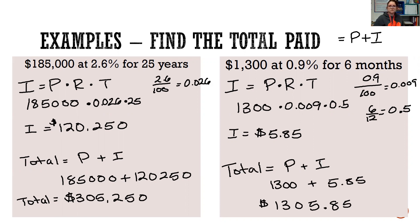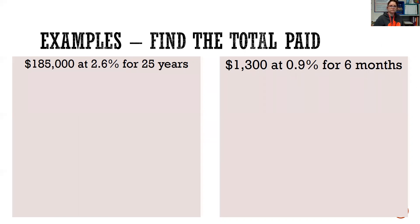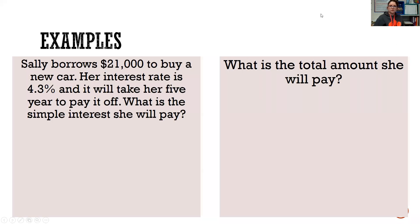The last two examples. The first one says Sally borrowed $21,000 to buy a new car. I'm going to circle that following our cubes method. Her interest rate is 4.3% and it will take her five years to pay it off. What is the simple interest she will pay?